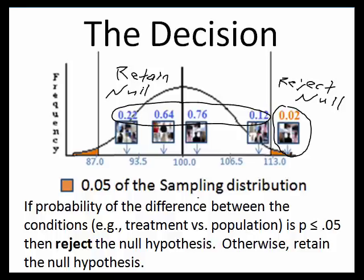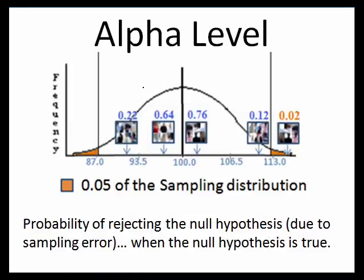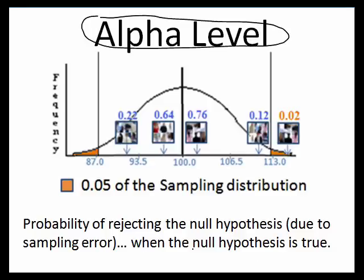That's how we make our decision. If sampling error could account for the result 0.05 or less of the time, it's pretty rare — reject the null. If that difference could be due to sampling error more than 0.05 of the time, we retain the null. That 0.05 is called our alpha level. In the behavioral sciences, we set our alpha to 0.05 — that's our industry standard. Alpha is the probability of rejecting the null hypothesis due to sampling error when the null hypothesis is actually true.